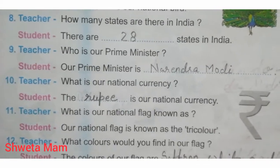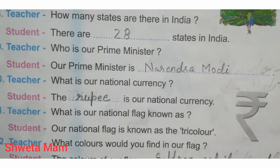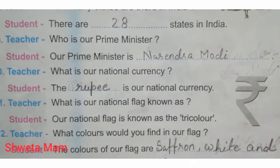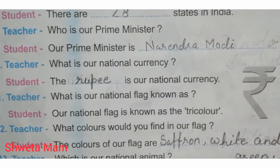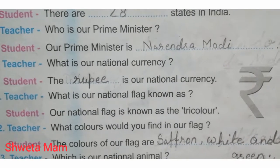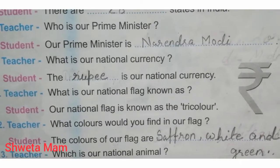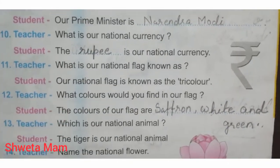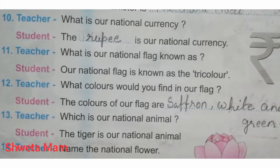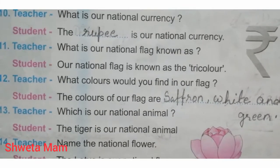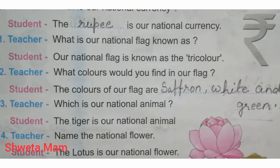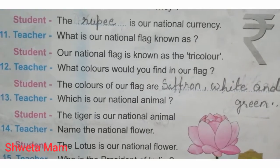Teacher: Who is our prime minister? Student: Our prime minister is Narendra Modi. Teacher: What is our national currency? Student: The rupee is our national currency. Teacher: What is our national flag known as? Student: Our national flag is known as the tricolor.